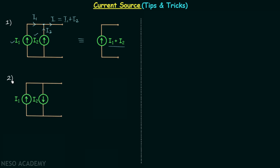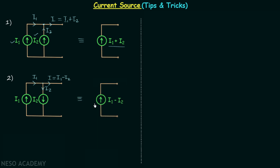Now we move on to the second case. Here we have only one change compared to the first case: two current sources are connected in parallel with currents I1 and I2, but the direction of I2 is now reversed. So I1 flows toward the node while I2 leaves the node. Using KCL, I equals I1 minus I2, and therefore the equivalent model will have a single source providing I1 minus I2 in this direction.